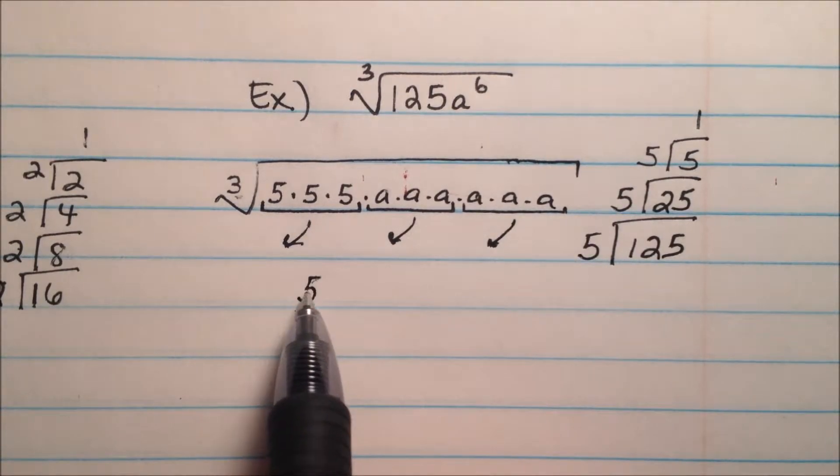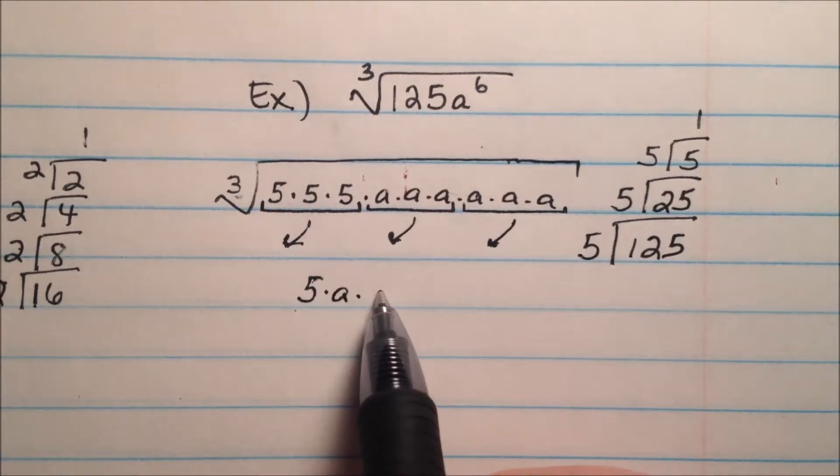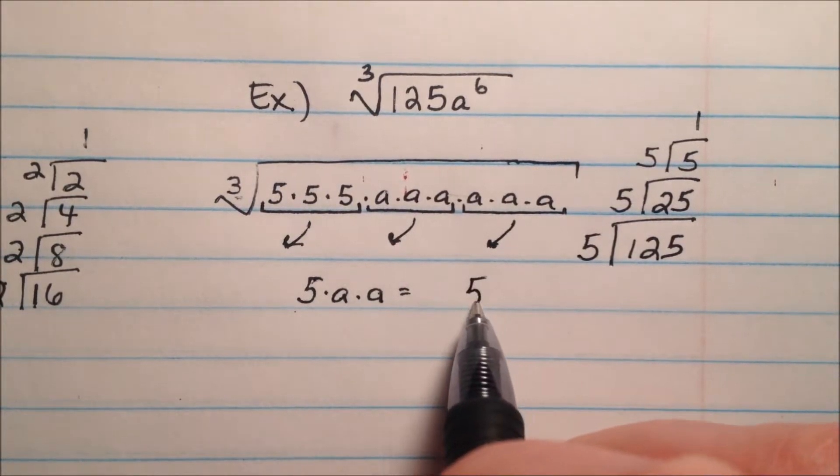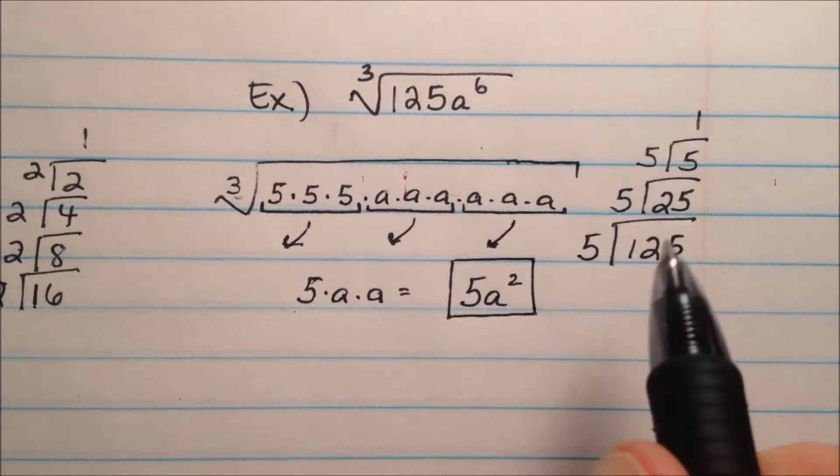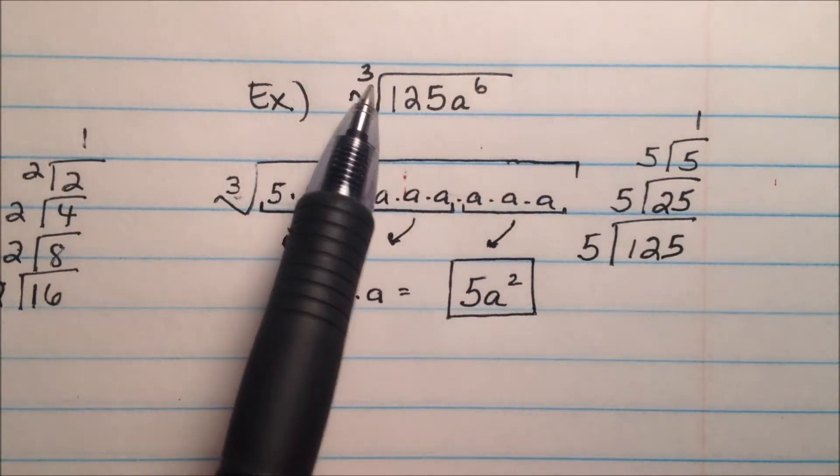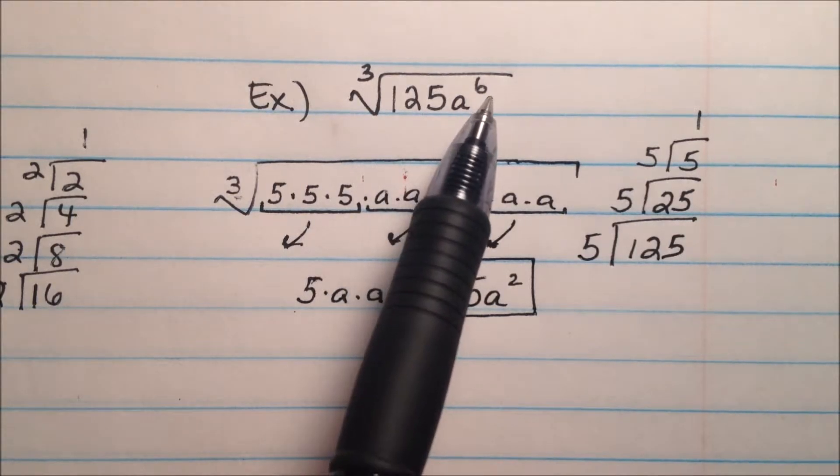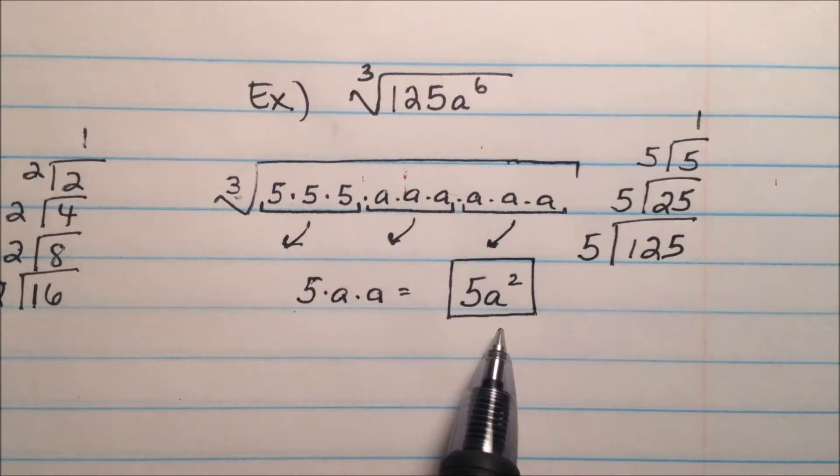So we're going to have a 5 on the outside, times one group of a, times another group of a. So we're going to have 5a squared. So our final value for simplifying the cubed root of 125a to the 6th is simply 5a squared.